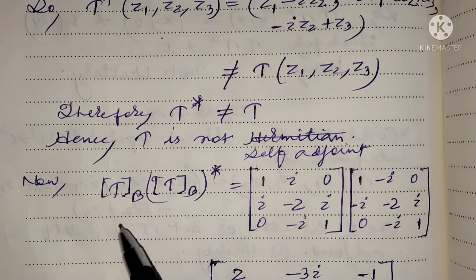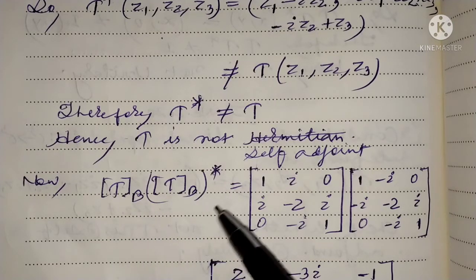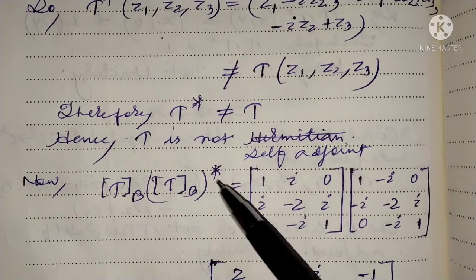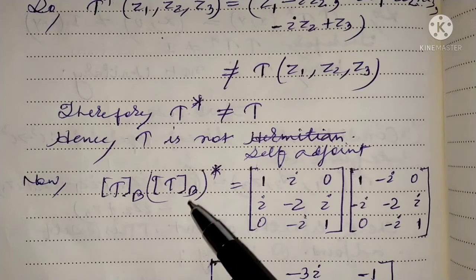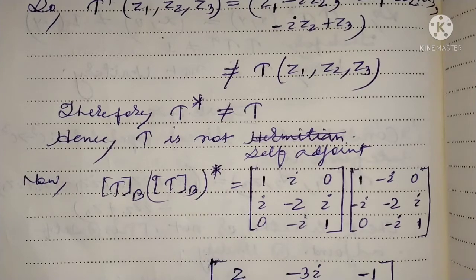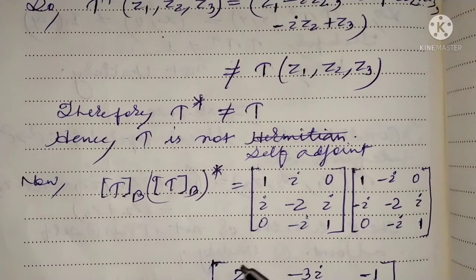For the unitary check: the matrix of T with respect to basis B multiplied by the adjoint of the matrix of T with respect to basis B.